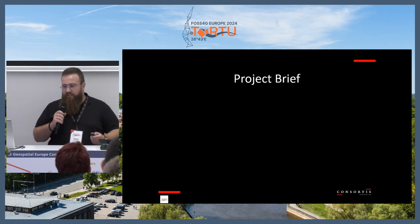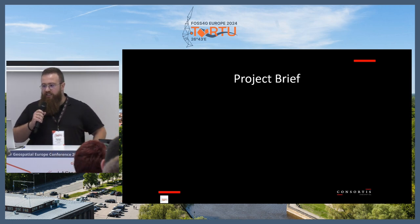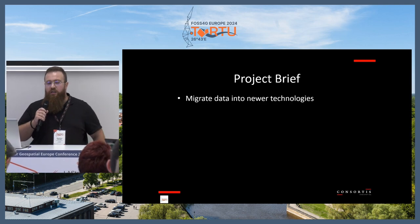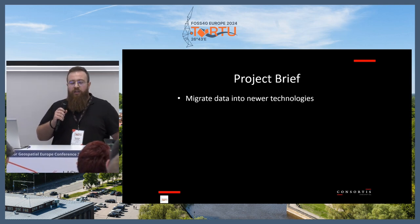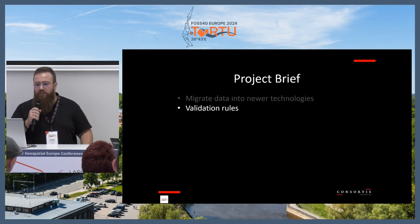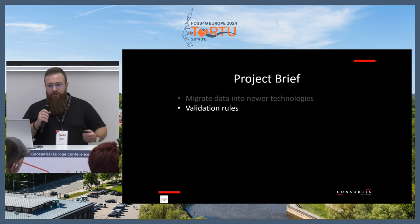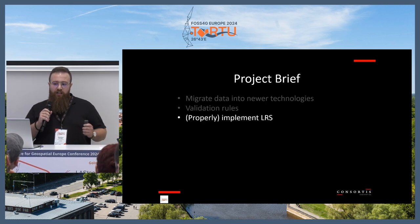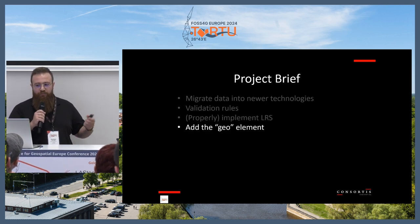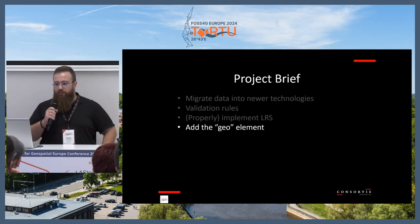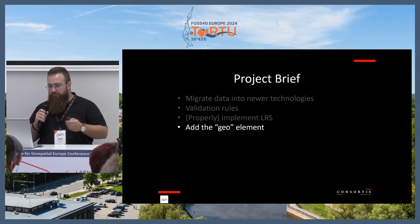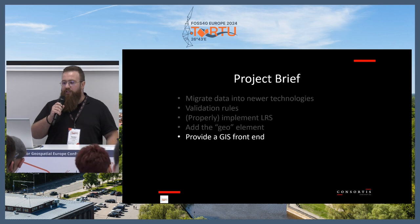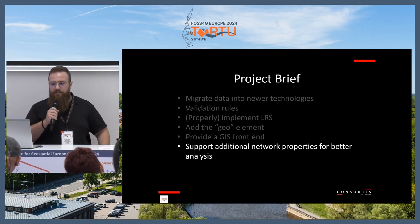The project brief in a nutshell is like this: we migrated the data to newer technologies, we implemented validation rules, we properly implemented linear reference systems, we added the geo element providing a map GIS front-end, and additionally we supported them with network properties for better analysis.